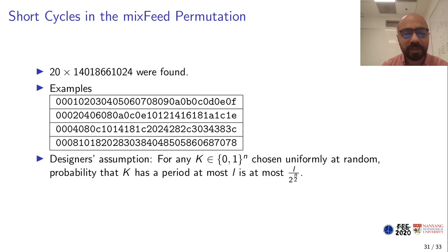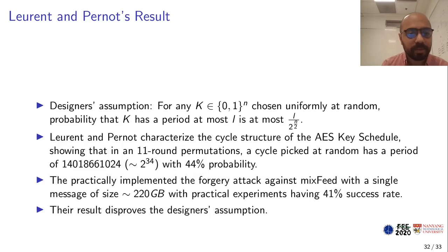In response to this, the designers gave an assumption such that for any secret key chosen at random, the probability that k has a period of l is at most l over 2 to the n over 2. Now our results do not contradict this assumption, but they show that there was a gap in the analysis. This led Laurent and Pernot to do a follow-up work where they characterize the cycle structure of the AES key schedule in more details. Applied for the 11-round case, they showed that this cycle length, which is about 2 to the 34, has a probability 44%. This means that we can practically implement forgery against mixFeed with single message of size about 220 gigabytes, and they have done practical experiments with success probability 41%, which is very close to their theoretical result. Using the attack in this paper plus the results on the AES key schedule, this disproves the assumption provided by the designers and shows that mixFeed is not secure in practice when the messages can be of size 2 to the power 34 and higher.